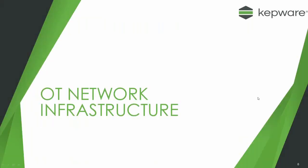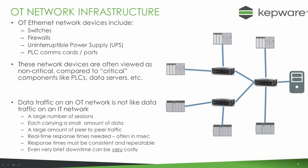Here's a little bit about OT network infrastructures. Your typical OT network consists of switches, firewalls, UPSs, and also the PLC comms cards and PLC comms ports themselves. Often on the shop floor the critical items are considered to be the PLCs, the data servers, the HMIs and the SCADA — and the network devices are often overlooked.